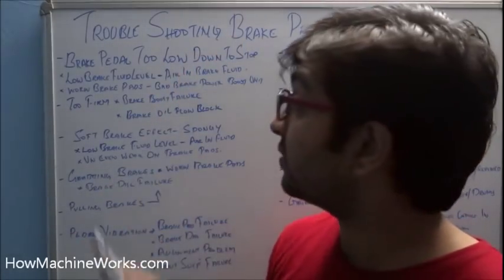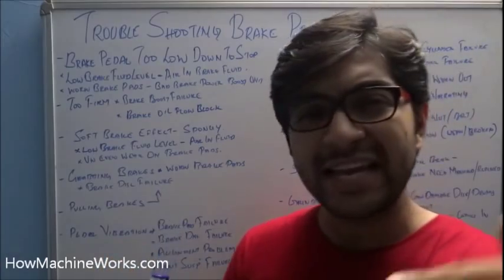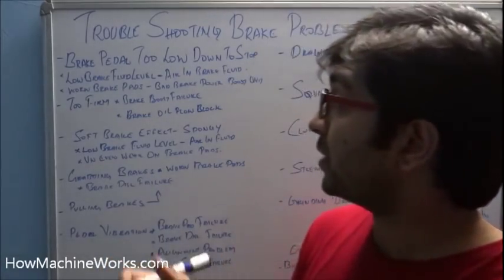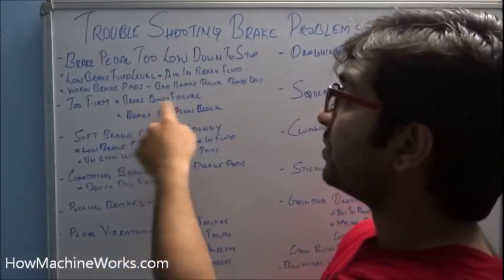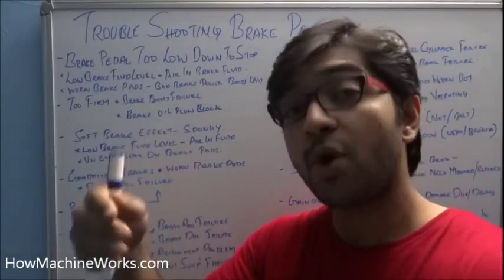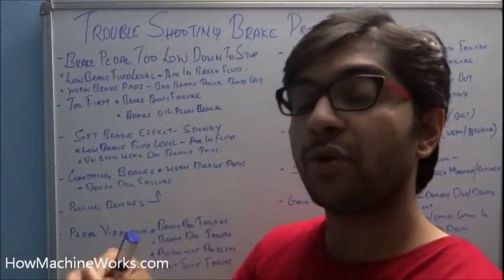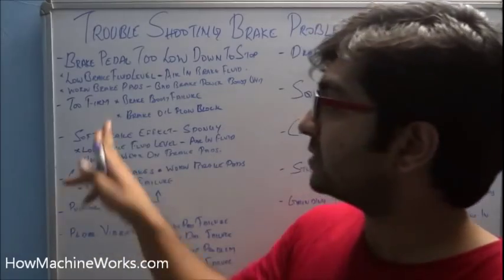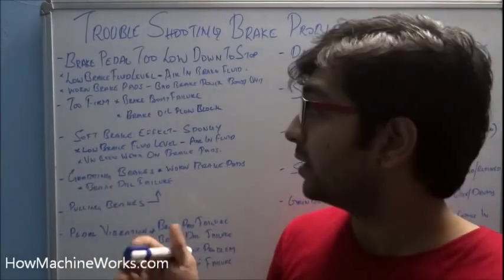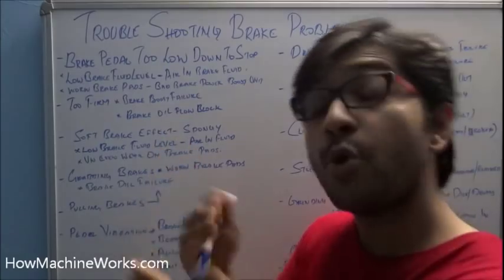The second brake failure is the brake being too firm — you need to give more effort to create a braking effect. This is caused by brake booster failure or a blockage in the brake oil circuit. If the oil is not allowed to flow continuously through the circuit, firm braking can happen.